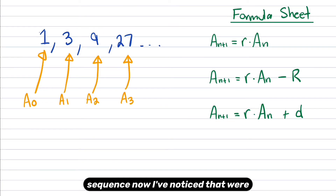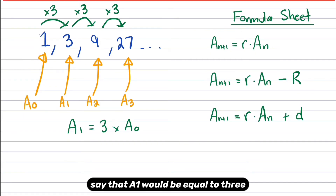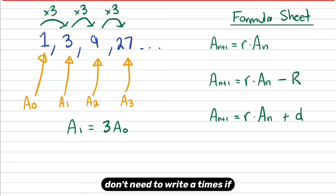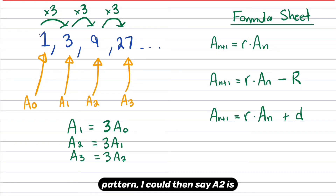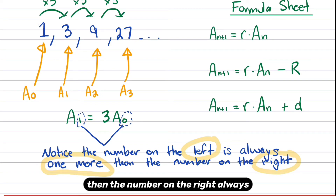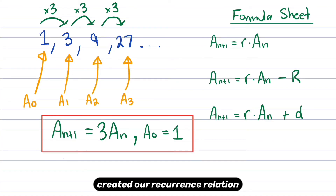In the next example, we've got a new sequence. I've noticed that we're multiplying by three each time. So I could say that a1 would be equal to three times a0 — in math we just write 3a0. Following the same pattern, a2 is equal to 3a1, and a3 is equal to 3a2. Notice the number on the left is always one more than the number on the right. We always write a0 at the end, which in this case is one. So we've created our recurrence relation.